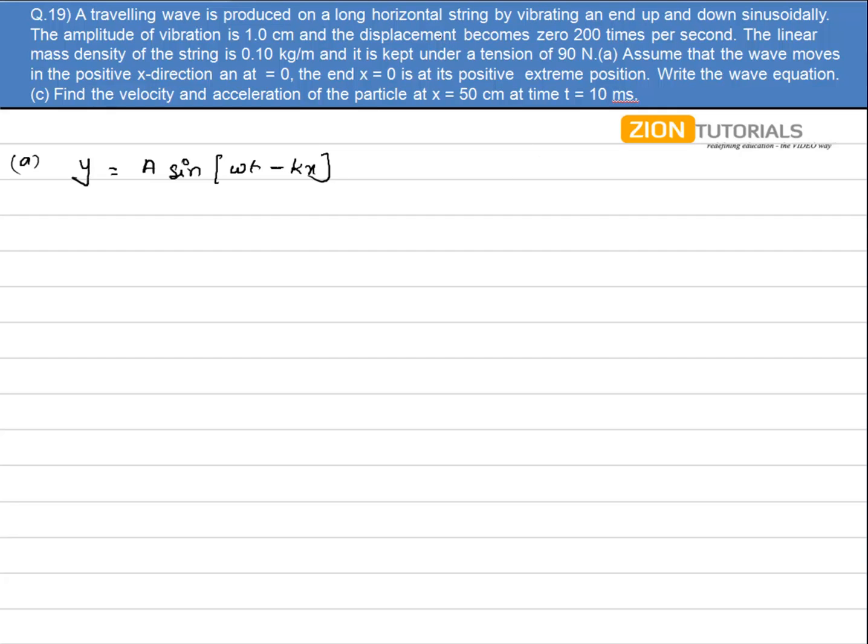It is given that the amplitude is becoming 200 times per second. That means the frequency will be given by 200 by 2, that is 100 hertz. So time period will be equal to 0.01 seconds.